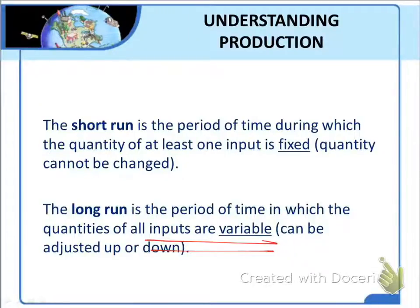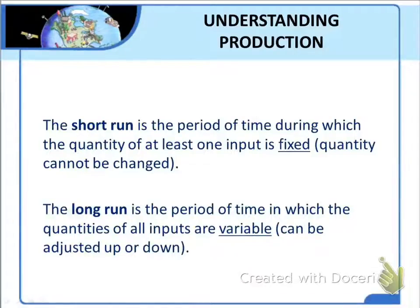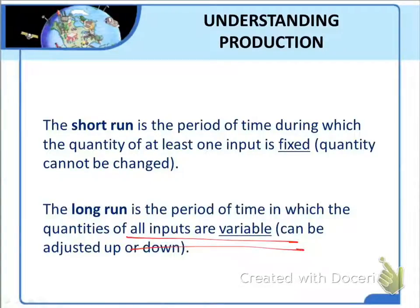Students sometimes fixate on a specific length of time that separates the short run from the long run. Remember: the long run is whatever length of time is required to change the production capacity. For a lemonade stand, the size of the stand could be expanded in a few days. For a nuclear power plant, it might take years. So the short run and long run differ depending on the industry. In the short run, the quantity of at least one input is fixed, whereas in the long run, the quantities of all inputs are variable. Fixed inputs in the short run become variable inputs in the long run.